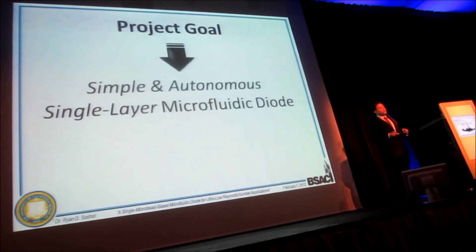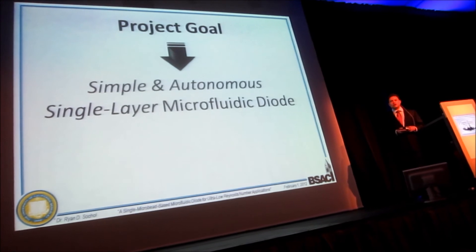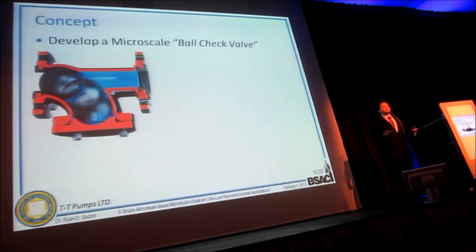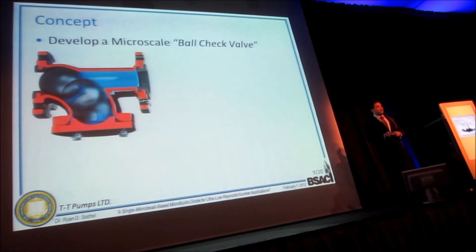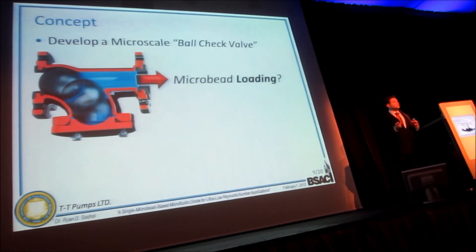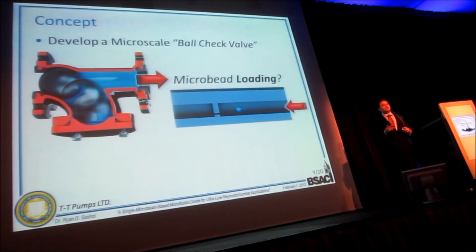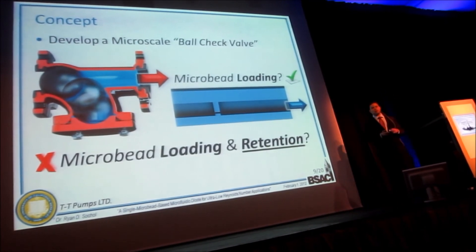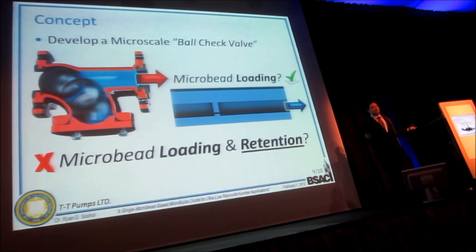What we wanted to do was develop a single-layer microfluidic diode that uses just a single microbead to rectify fluid flow under ultra-low Reynolds number conditions. The concept is simple in theory: scale down a macroscale ball check valve to the microscale. The challenges are that unlike at the macroscale, where you can physically place a ball into a valve chamber, at the microscale there is the question of how to load a microbead. More importantly, when you reverse the flow, you find that you've lost the microbead — so the real question is how do you load and then retain the microbead.